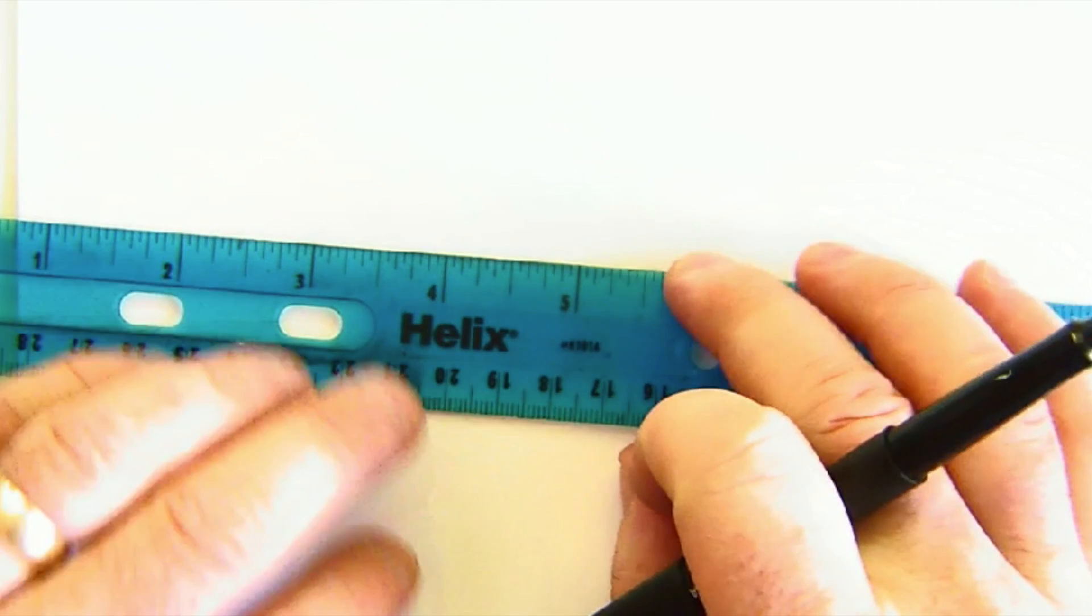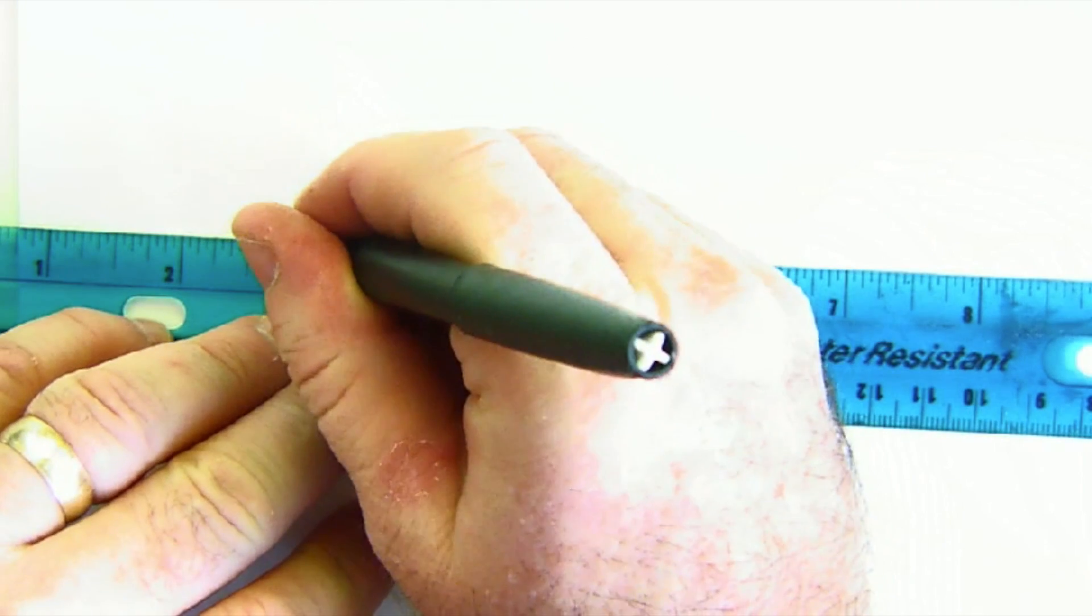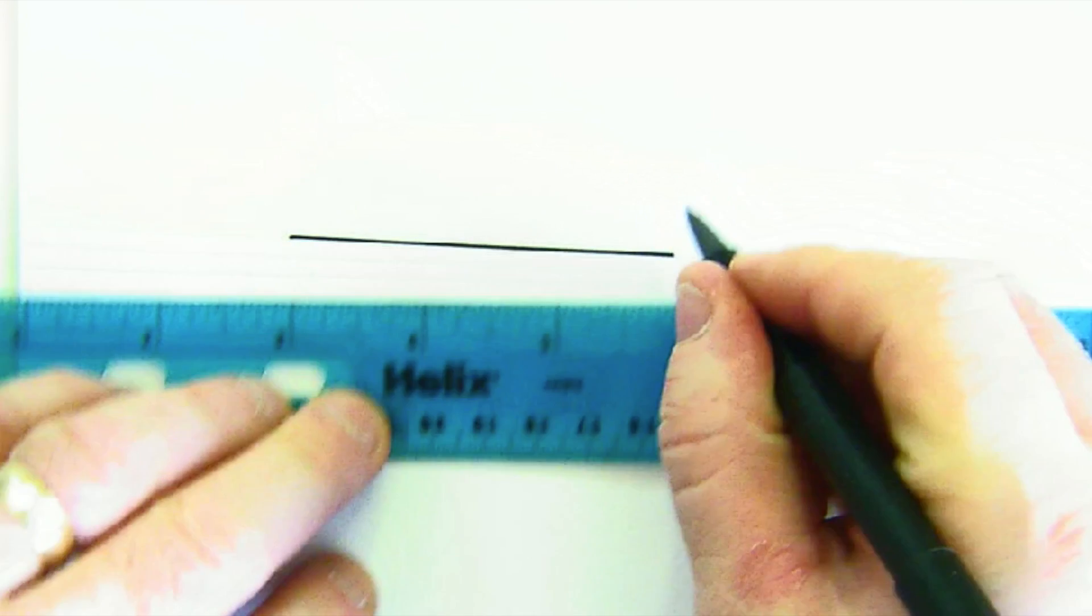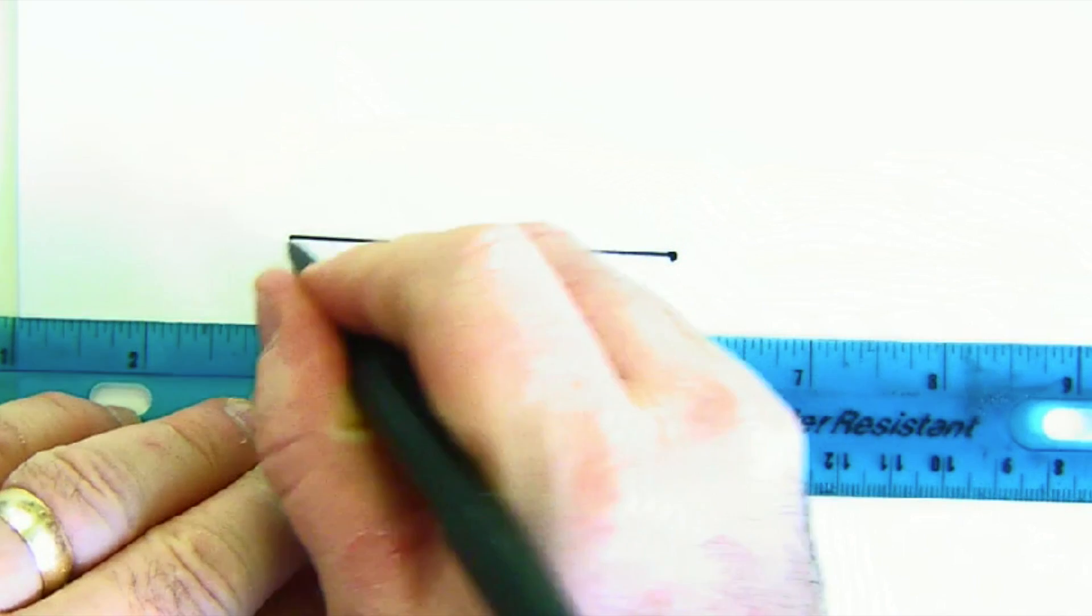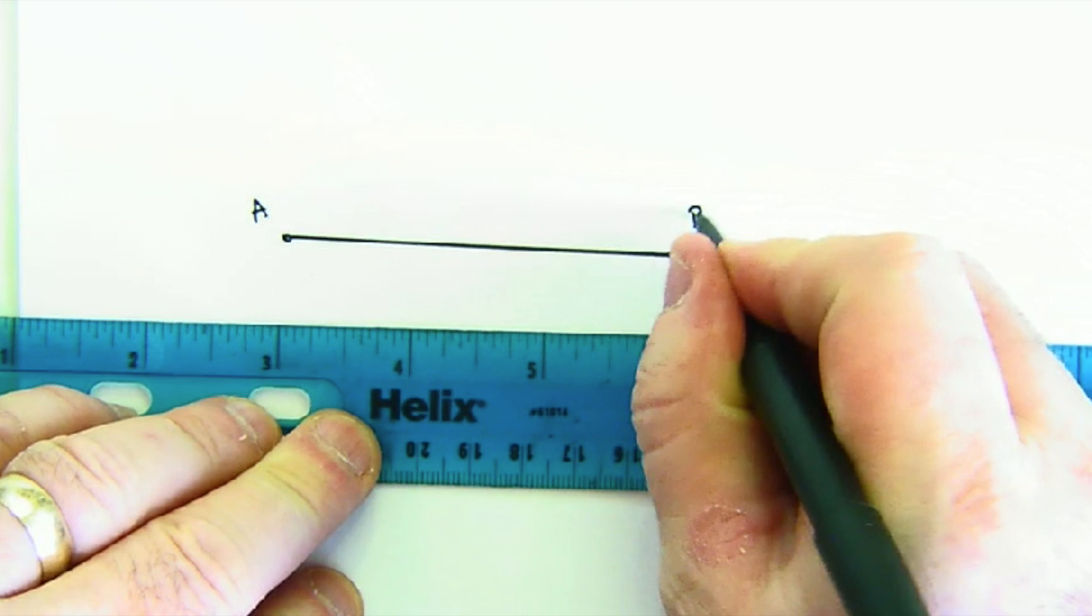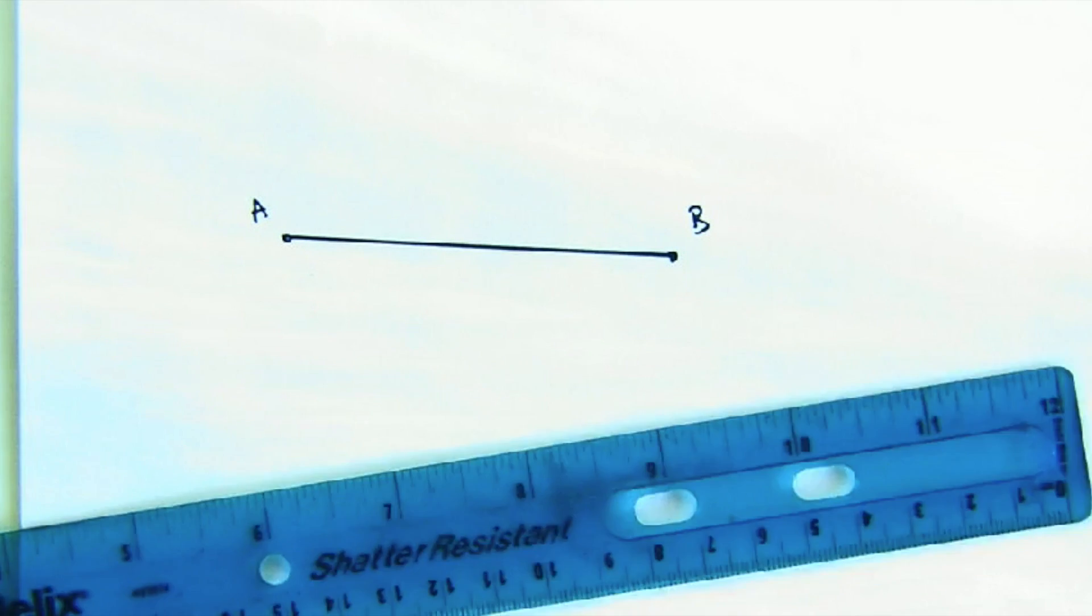All right, let's take a look at constructing a midpoint. Now a midpoint is, of course, a construction dealing with a segment. You have to have two endpoints. Here's our segment AB.